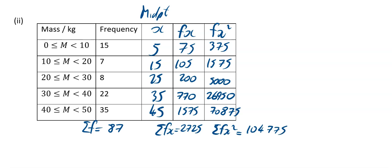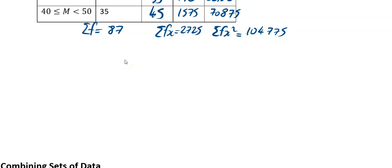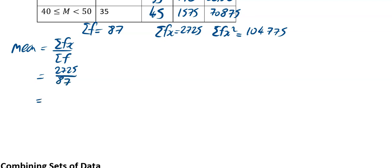All we're left to do is find our mean and our standard deviation. Write down your formula and then fill it in. Your mean is equal to sigma fx divided by sigma f — so it is going to be 2725 divided by 87. When you work that out, you're going to get 31.32, and that's going to be in kilograms, to two decimal places.